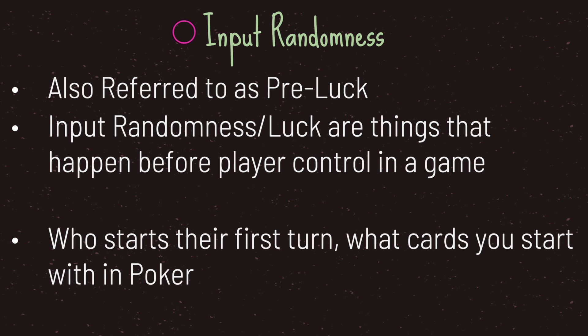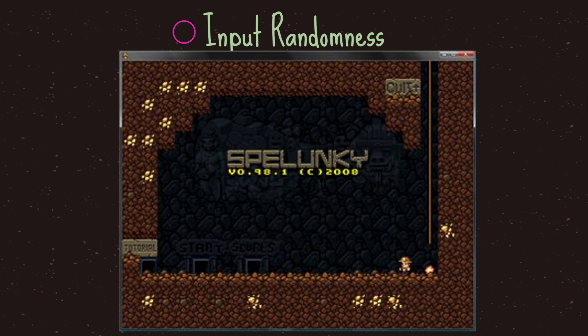Input randomness, also referred to as pre-luck, is basically the randomness or luck that happens before your player has a chance to make decisions in a game. For example, input randomness could be the randomness of who starts their turn in a game. A more popular example would be the cards dealt to you in poker — before you can make decisions, you must first be dealt a random set of cards. Spelunky is a great example: before the player can control the main character, a procedurally generated cave is created. In this case, the generation of the cave is the input randomness.